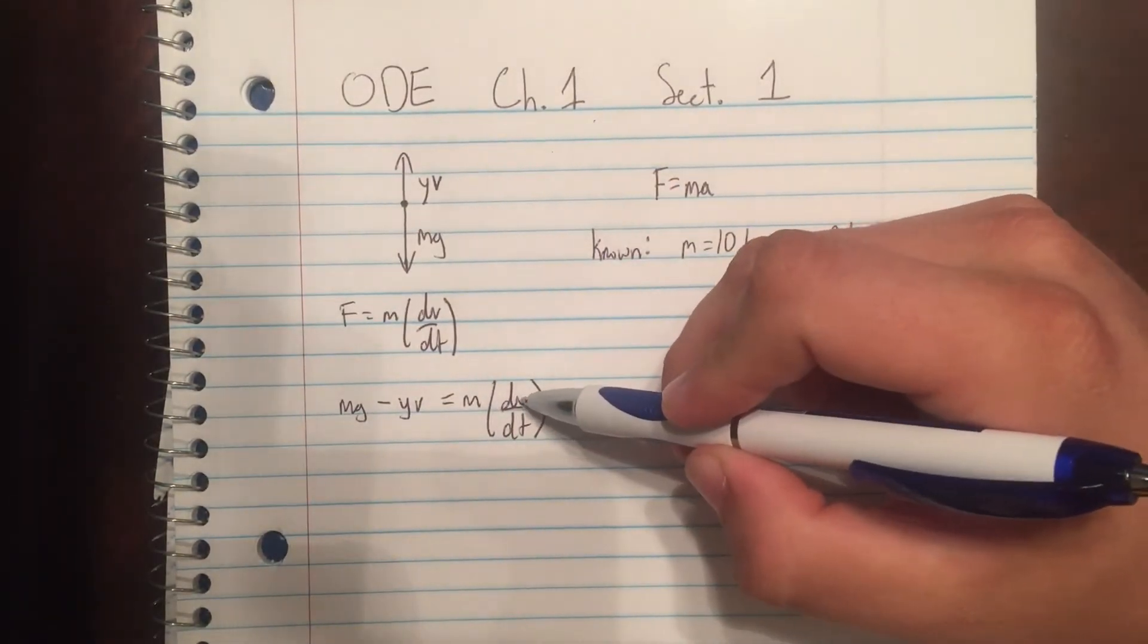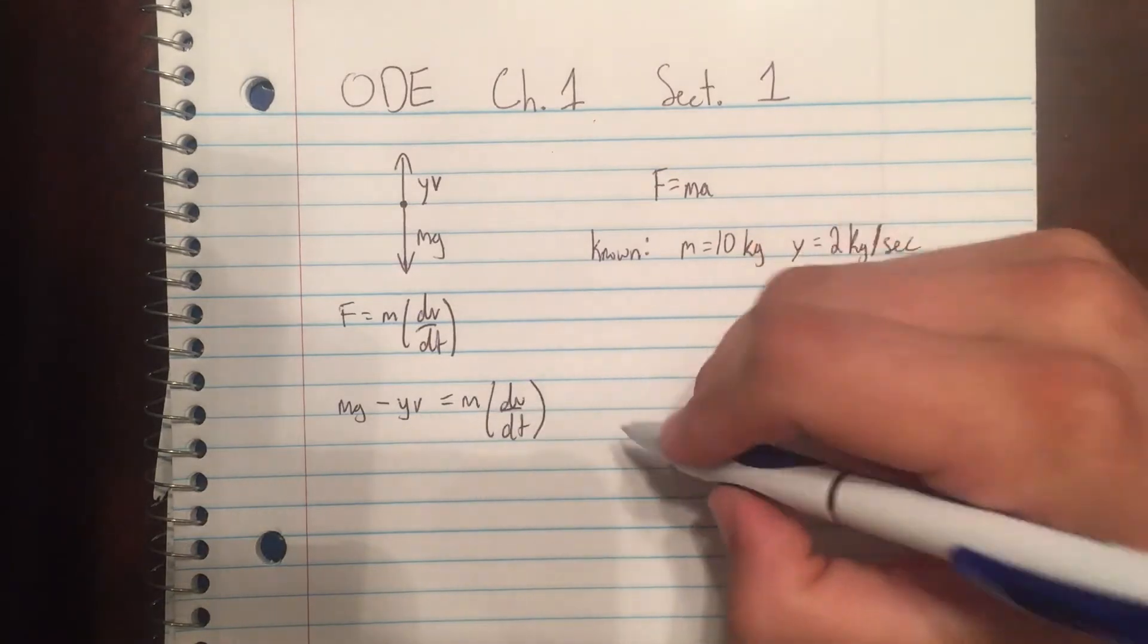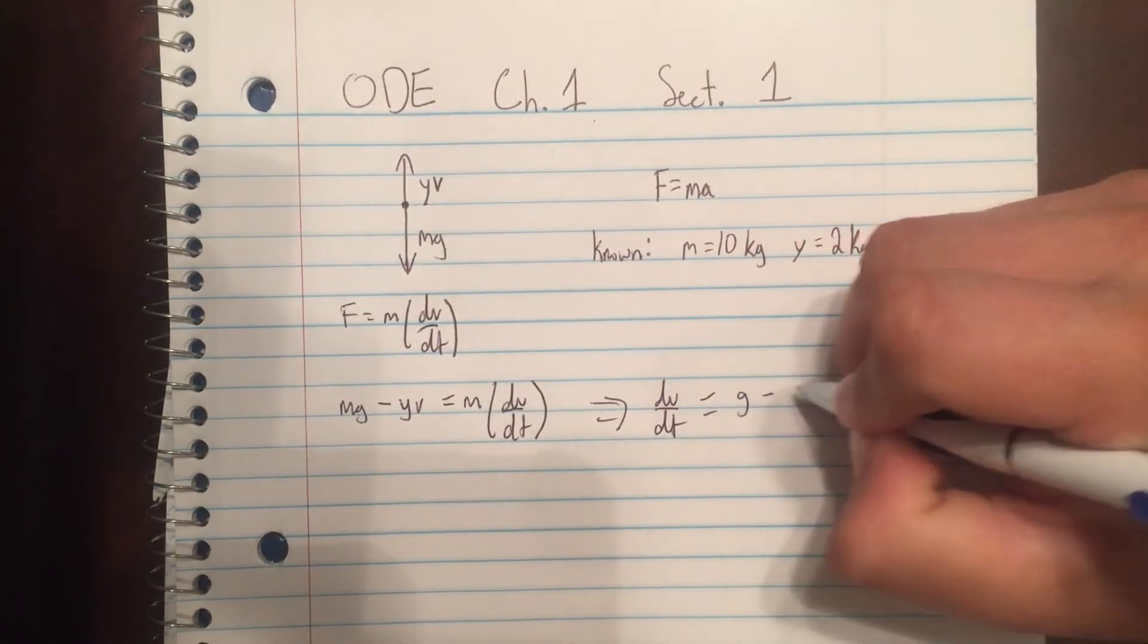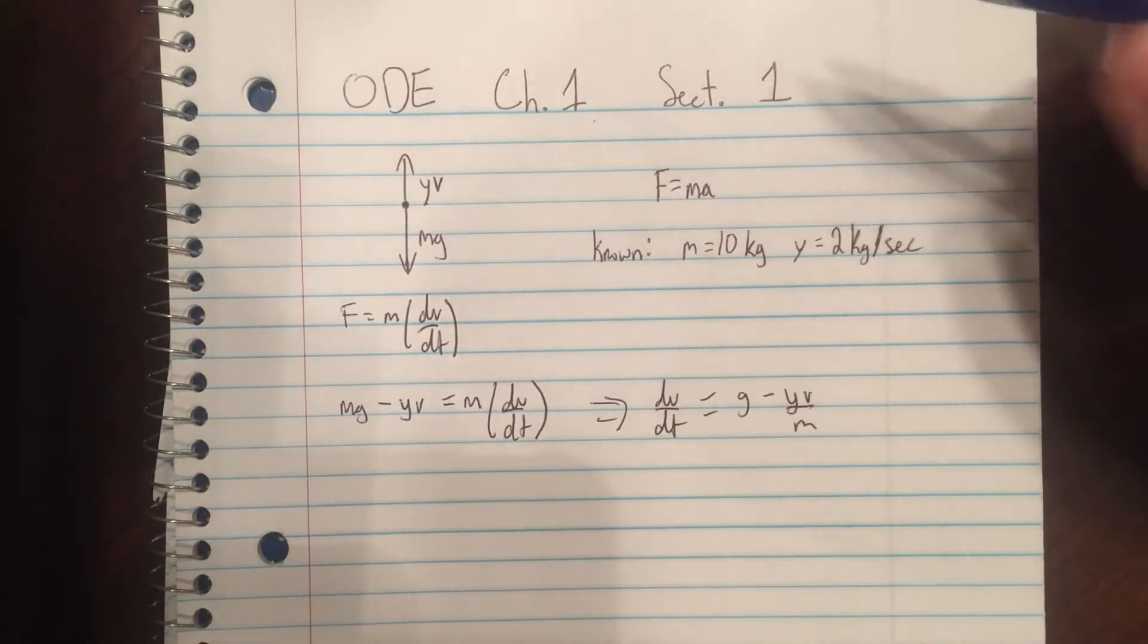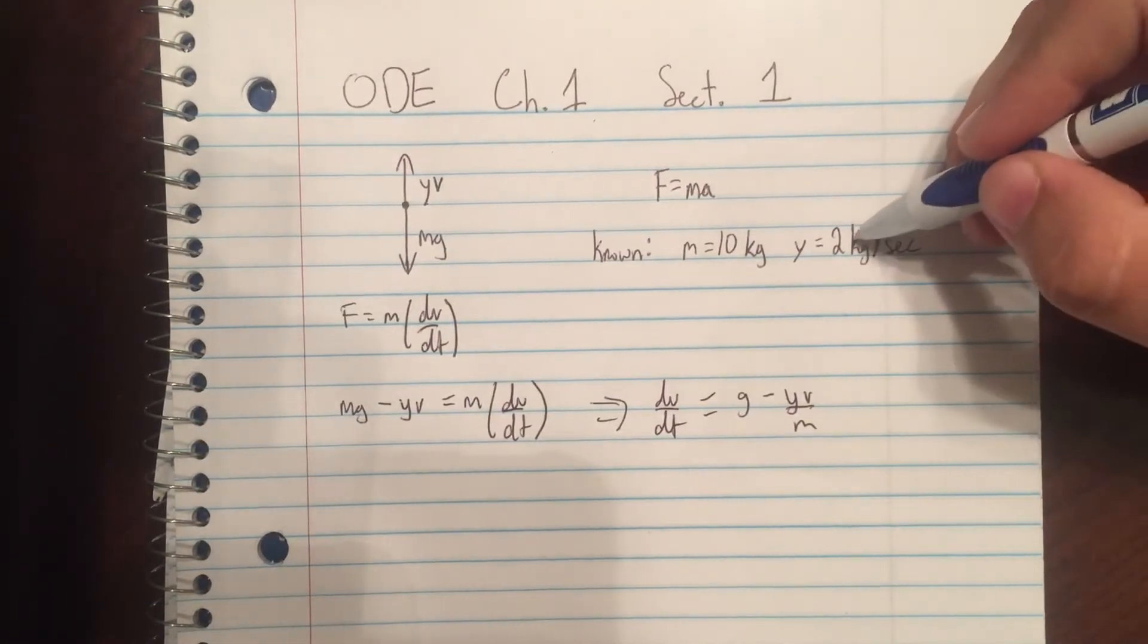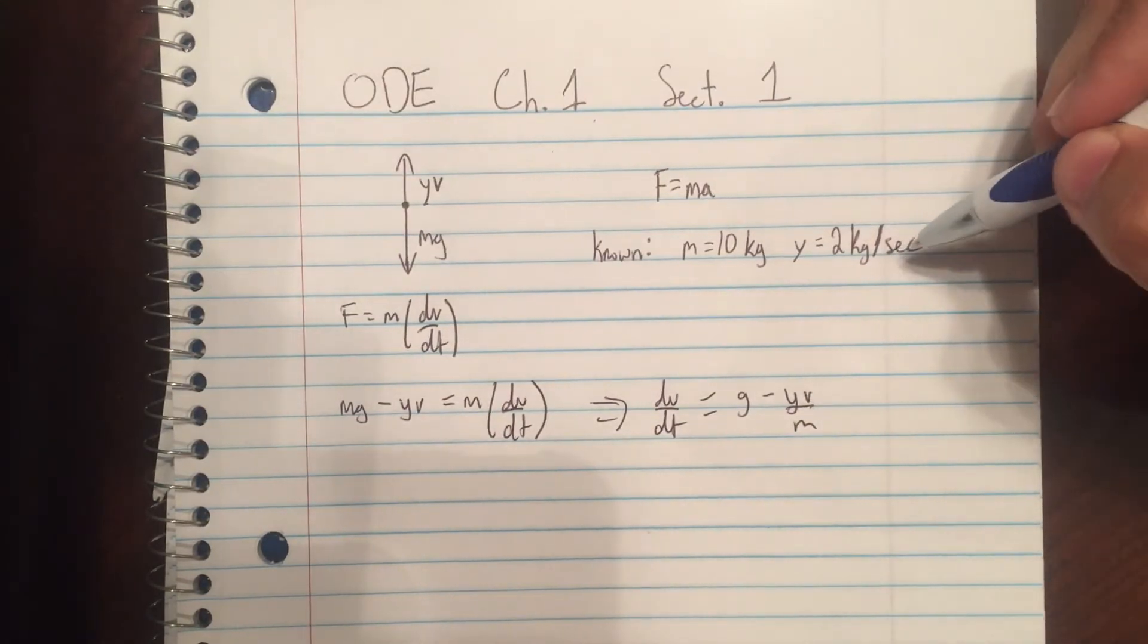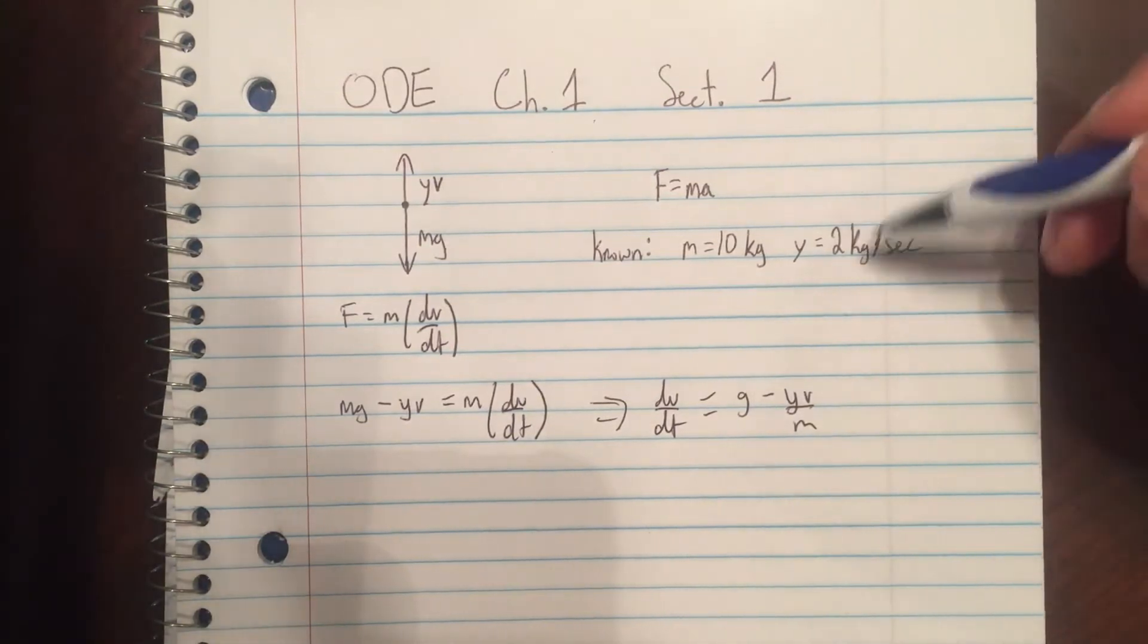We're trying to solve for dv dt because we're trying to find the maximum velocity. We're going to divide by m, so this will go to dv dt equals g minus gamma v over m. We have some constants here. We know that the mass is 10 kg, gamma is 2 kg per second. Keep in mind this unit is really weird because we have velocity in meters per second and the total force has to be in meters times kilograms divided by seconds squared.